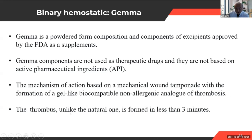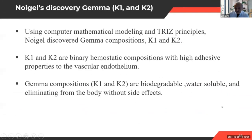The biocompatible thrombus — unlike the natural one — is formed in less than three minutes, much faster than existing hemostatic devices. Using mathematical modeling and TRIZ principles, we came up with two products: K1 and K2. Both are binary hemostatic compositions with high adhesive properties to vascular endothelium and great attraction to the bleeding site.